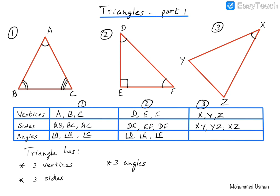For the third triangle, we have angle X, angle Y and angle Z. So a triangle is a closed figure which has three vertices, three sides and three angles. By changing the length of the sides or the angles and having different combinations, we can make triangles of different dimensions.